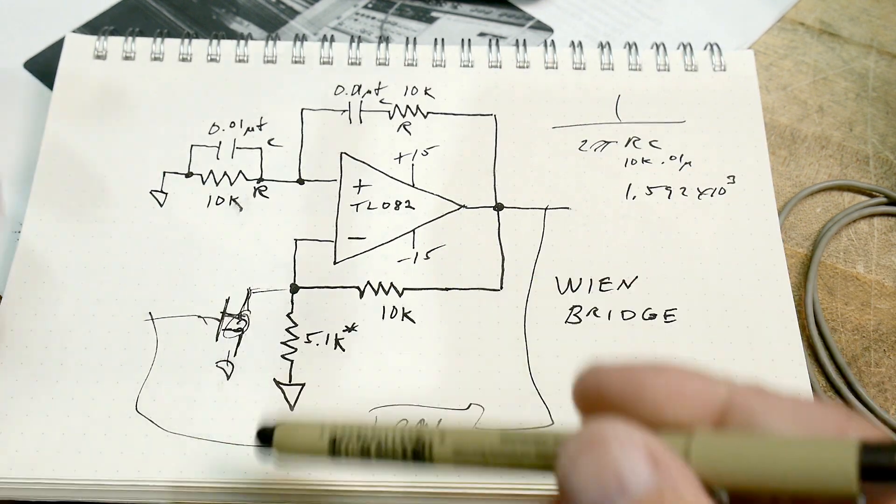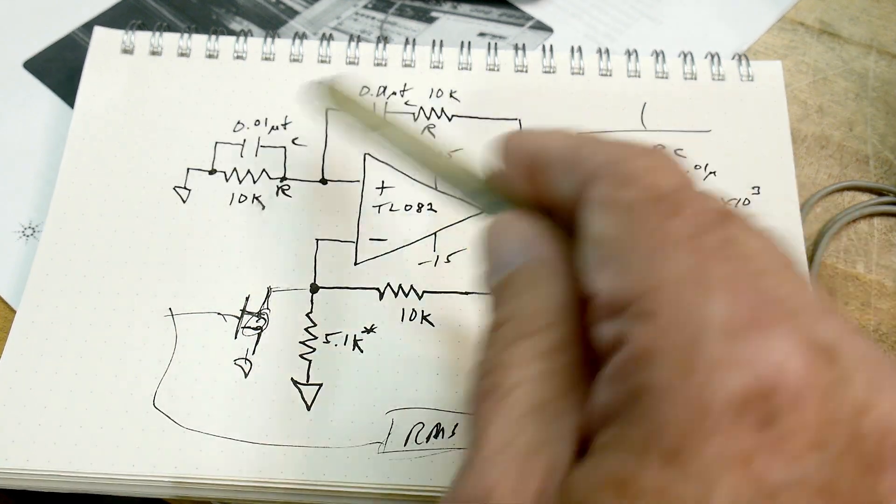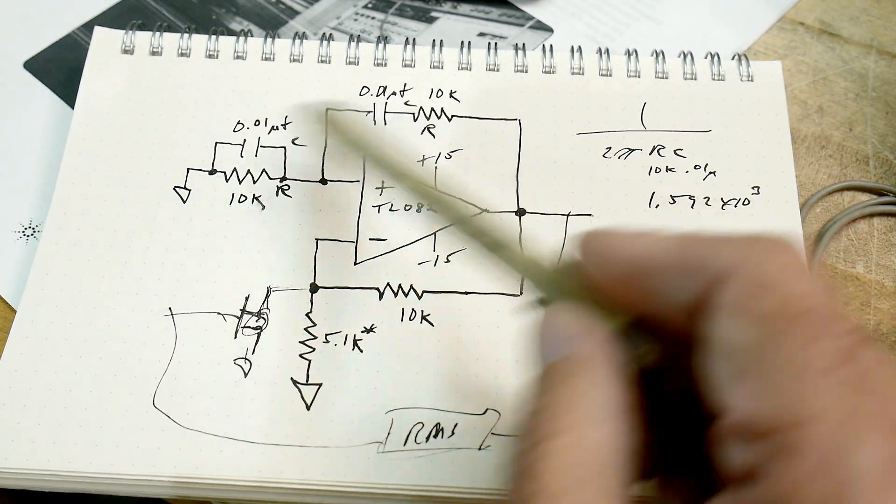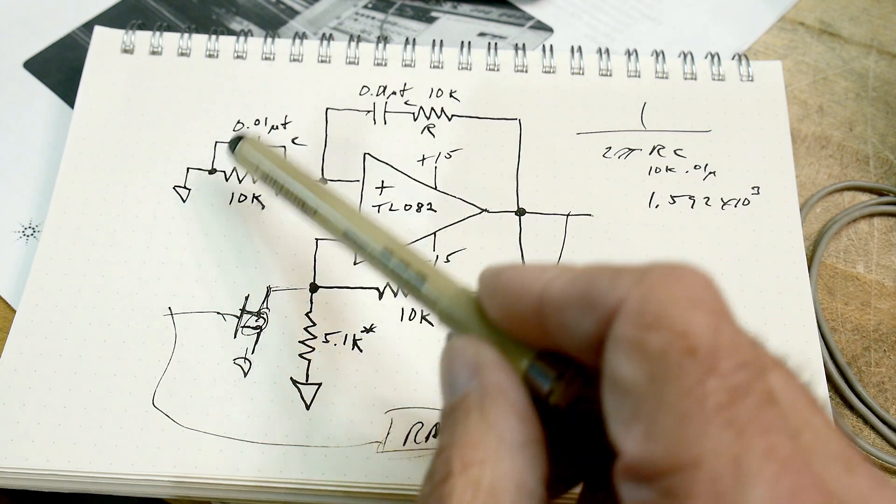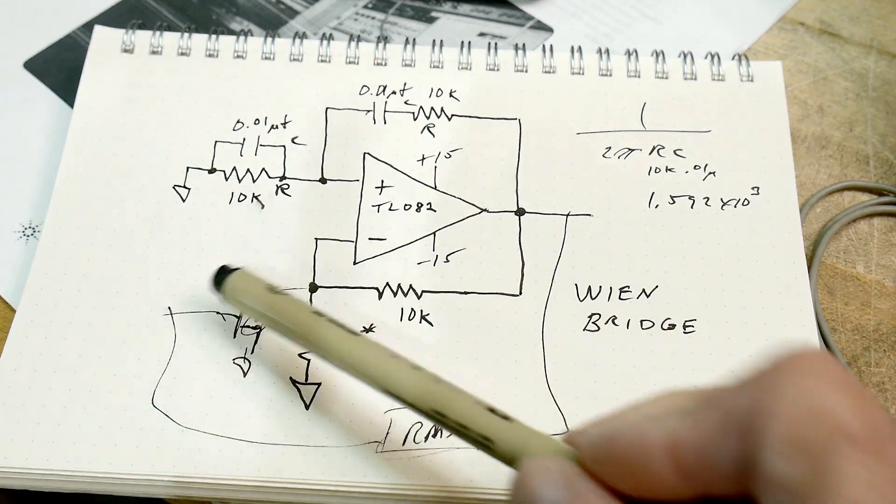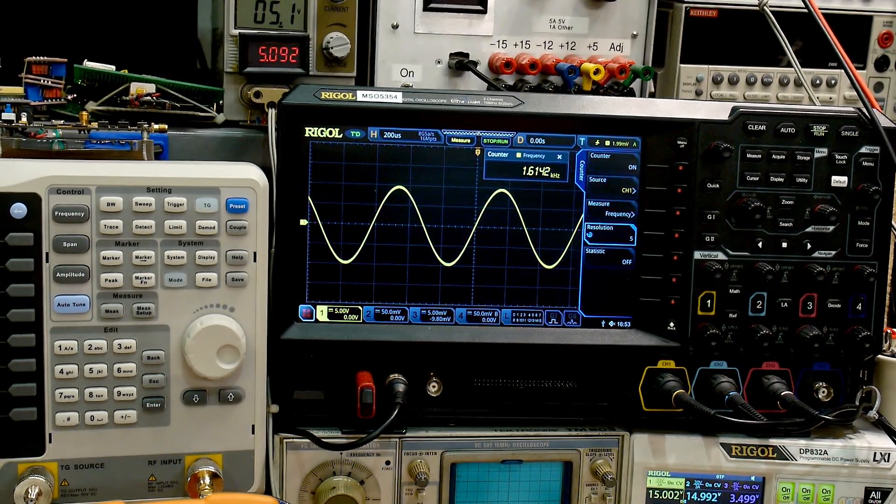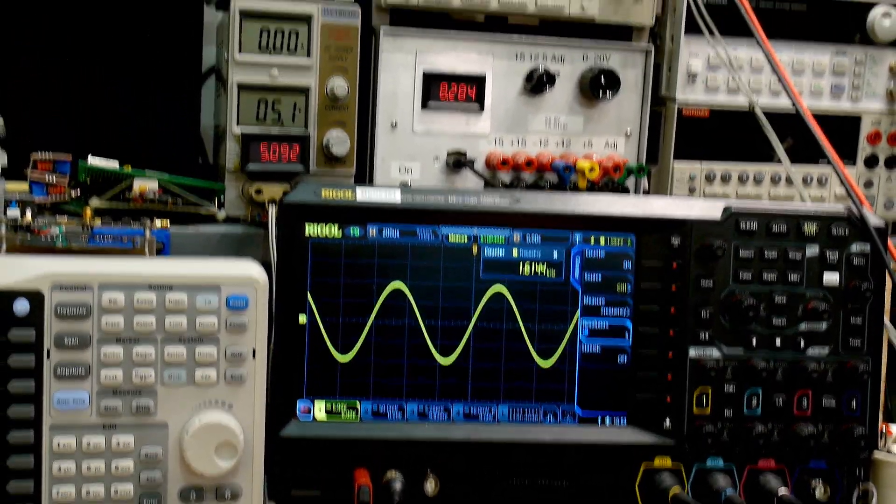It does make it hard to make something variable though, because you have to vary things at the same time. So you have to have ganged, a ganged capacitor or a ganged resistor in order to, in order to make this work, because you have to change them, change them at the same time. But yeah, pretty impressed. Very nice clean sine wave and a very good total harmonic distortion.